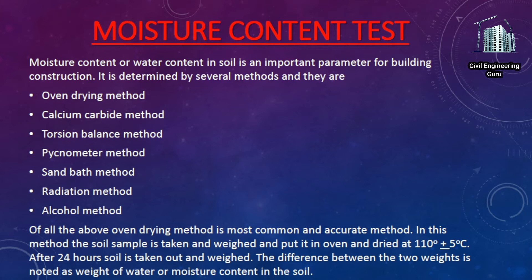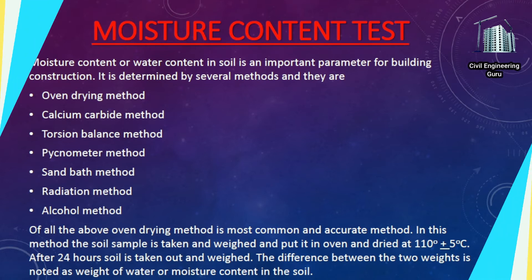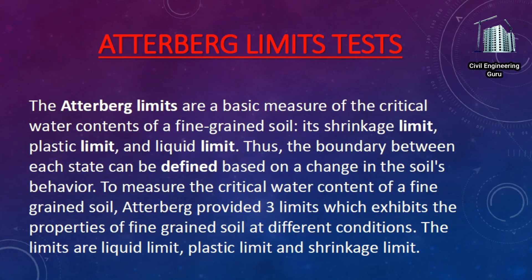In the oven drying method, the soil sample is taken and weighed, then placed in an oven and dried at 110 ± 5°C. After 24 hours, the soil is taken out and weighed again. The difference between the two weights is noted as the weight of water, or moisture content in the soil.